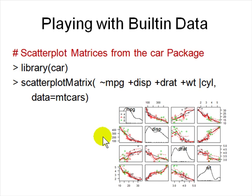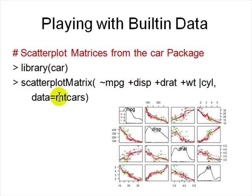For example, the 'car' library has built-in datasets. Using 'scatterplotMatrix()' with parameters miles per gallon, displacement, drat, weight, cylinders — and 'data=mtcars' (the mtcars dataset) — it plots the relationships between those car engine variables showing, for instance, miles per gallon versus displacement. Playing with examples helps you understand features you plan to use in your own R code.